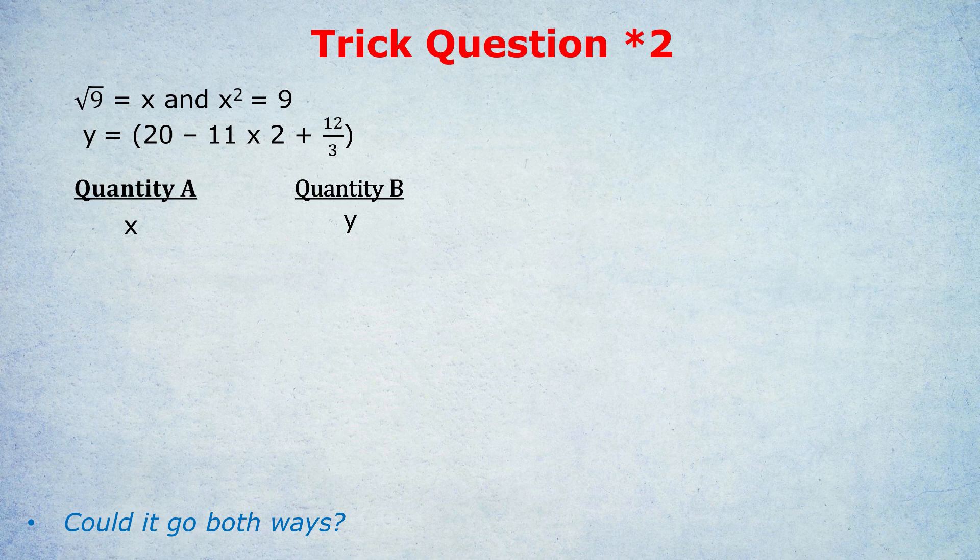So if x is the positive root of 9, we know for sure that x is 3. The first equation — square root of 9 equals x — tells us x is exclusively 3, not minus 3, because of that square root symbol. If x is 3 and y is 2, then x is bigger than y, so quantity A is bigger. Square root symbol on the page means the positive root: square root of 9 equals 3 and only 3.